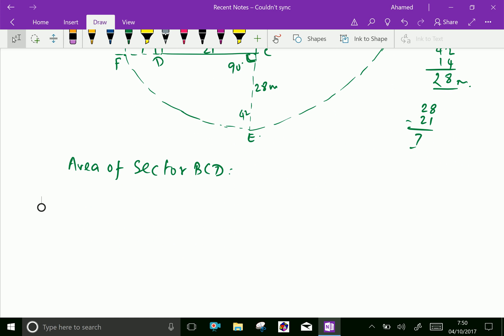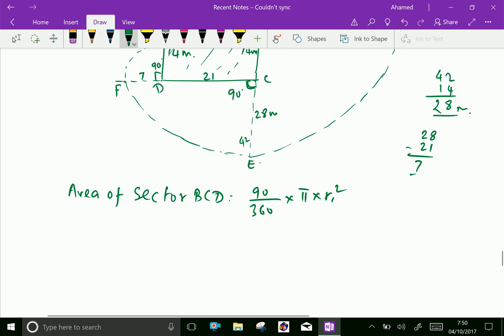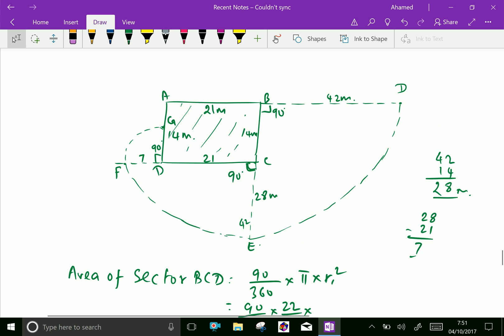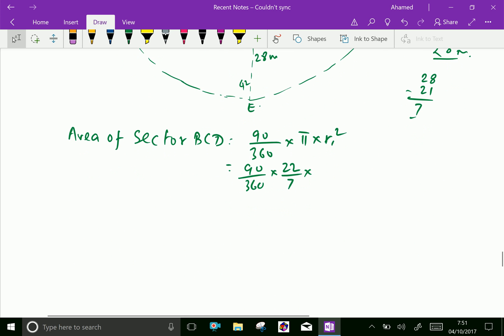Sector area of BCD is 90 by 360, that is theta by 360 into pi R1 square. Here, 90 over 360 into 22 by 7 into R. R is 42 into 42.